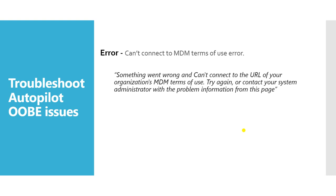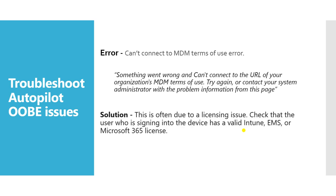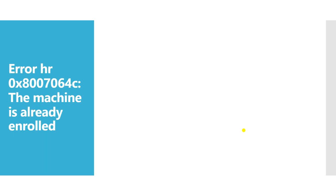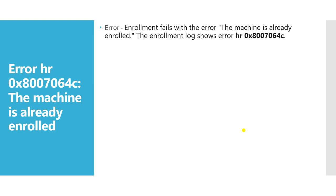Sometimes during autopilot OOBE you get the error 'Cannot connect to MDM terms of use.' The message says something went wrong and it cannot connect to your organization's MDM terms URL. This error is often due to a licensing issue. Check that the user signing into the device has a valid Intune, EMS, or Microsoft 365 license assigned.